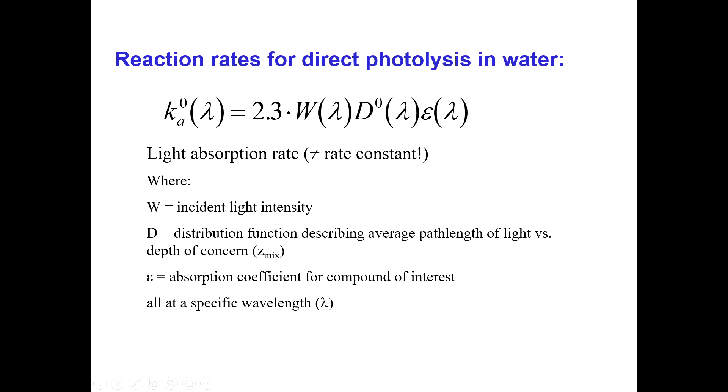Well, the rate constant for direct photolysis, and remember we use a lowercase k for rates, and the parentheses here is saying that this rate is dependent upon wavelength, not that it's multiplied by wavelength. So the rate of some direct photolysis reaction is proportional to W, which is the incident light intensity, how much light is actually striking our chemical, multiplied by D, which is a distribution function which describes the average path length of light versus the depth of concern.